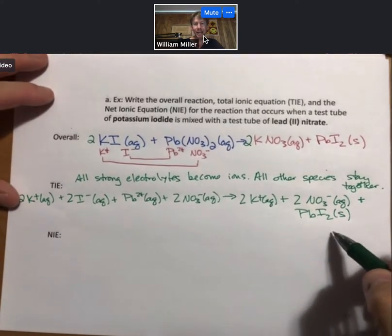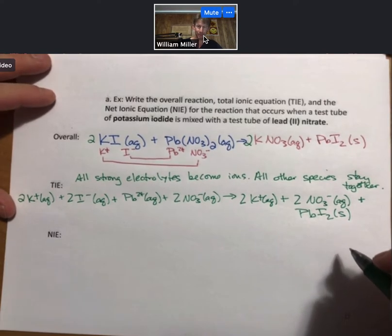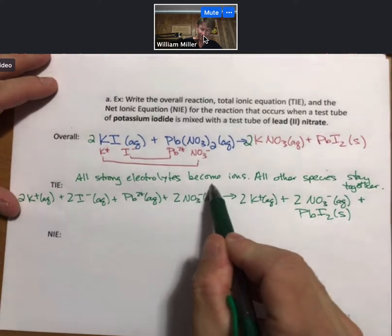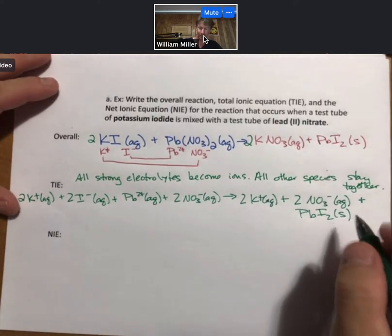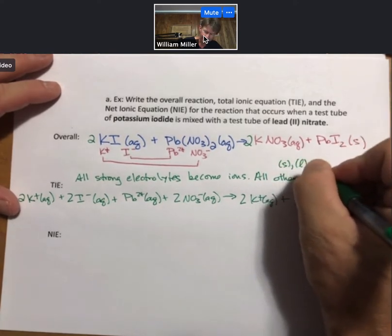But the lead iodide does become a solid. It is not aqueous anymore. And so what I mean is all strong electrolytes become ions. You can see that. All other species stay together. Those other species are going to be solids, liquids,